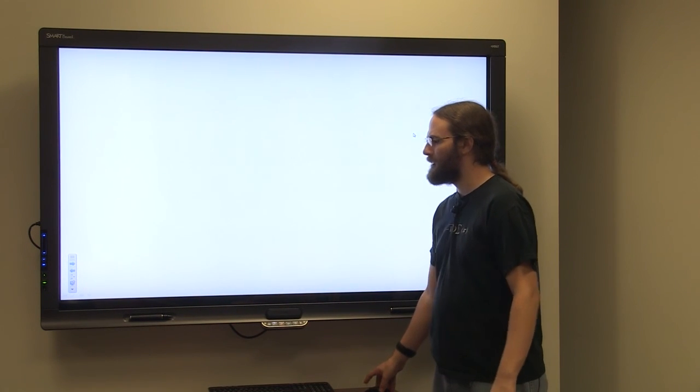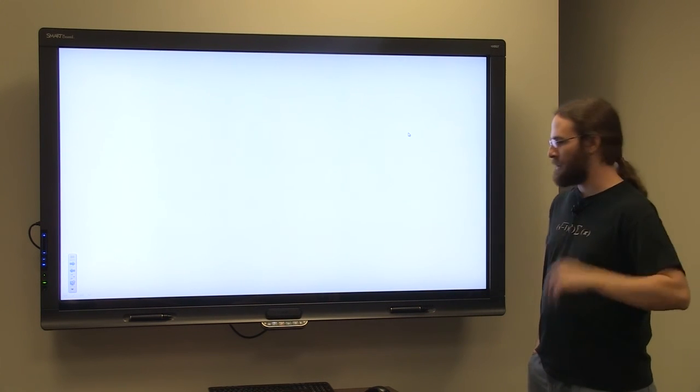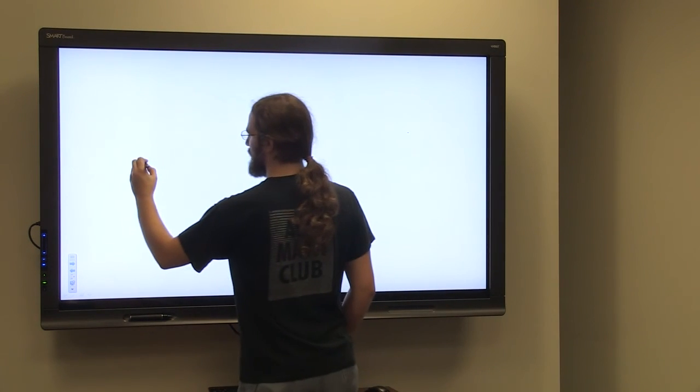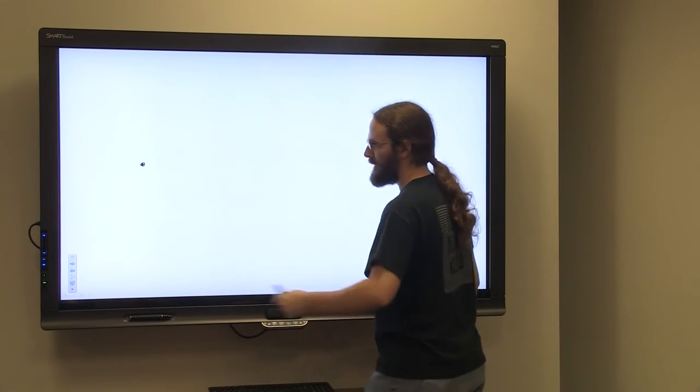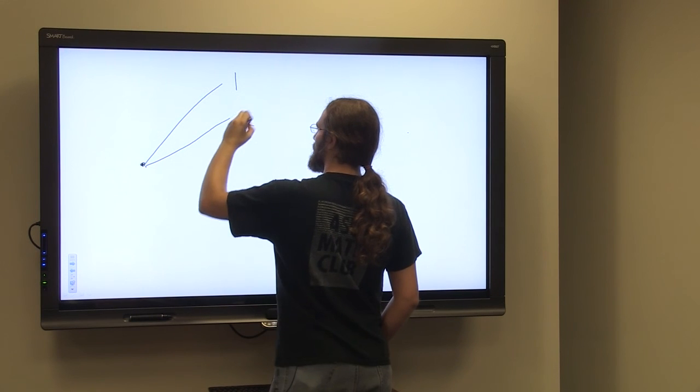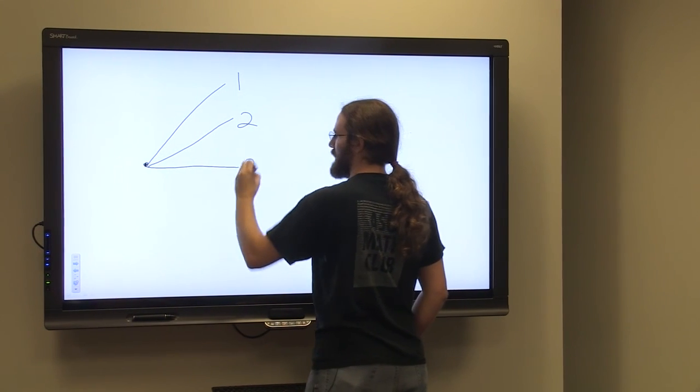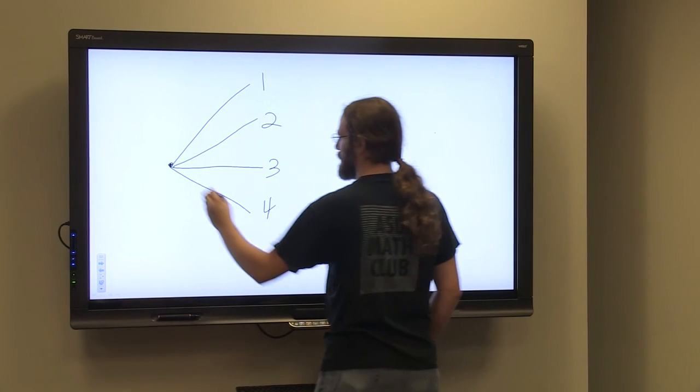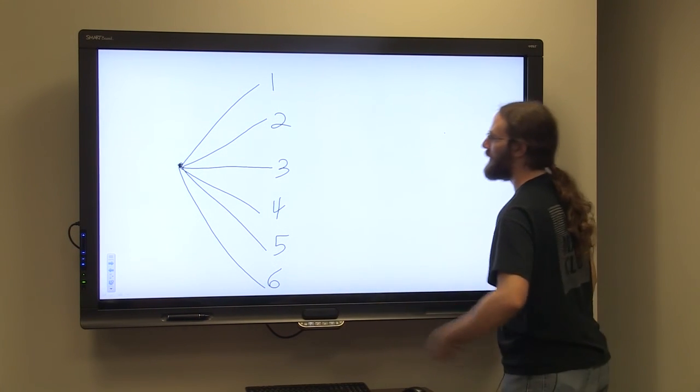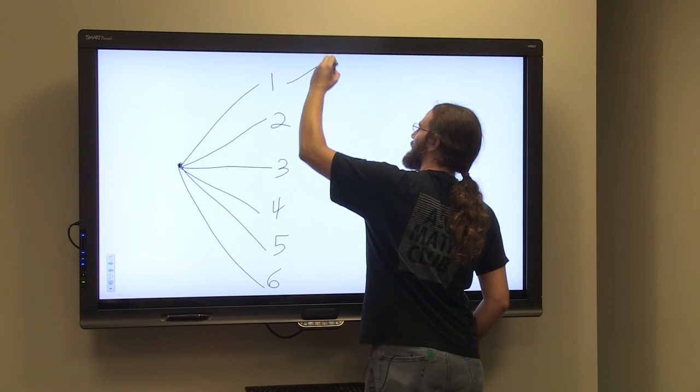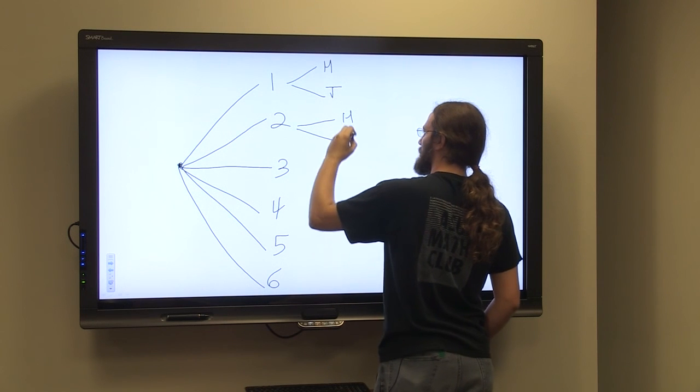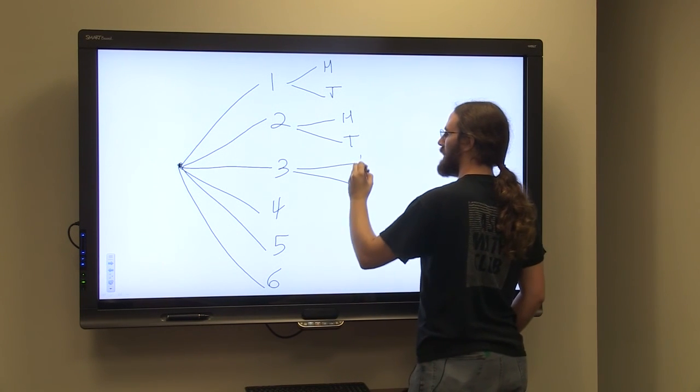We know probability is success over total number of outcomes. So let's look at the number of outcomes. Let's start by rolling our die. We can roll the die and get a one, a two, a three, a four, a five, or a six. And then after we roll that die, we can flip heads or tails.